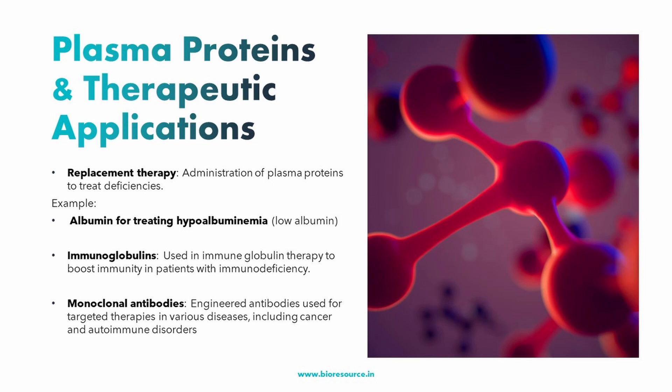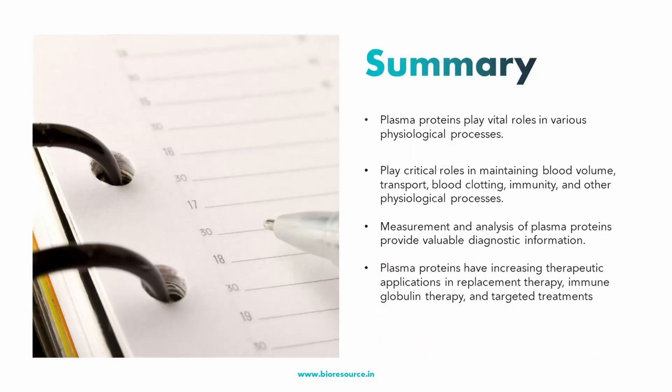Immunoglobulins derived from pooled plasma donations are used in immune globulin therapy to boost the immune system of patients with immune deficiency or those undergoing specific treatments that suppress immunity. Additionally, the field of bioengineering has revolutionized the use of plasma proteins — monoclonal antibodies are engineered antibodies designed to target specific antigens associated with disease, and these have become powerful tools for treating various conditions like cancer and autoimmune disorders.